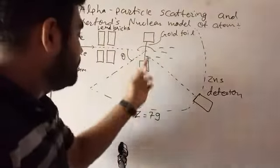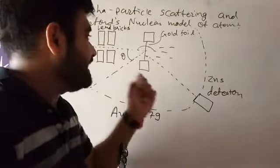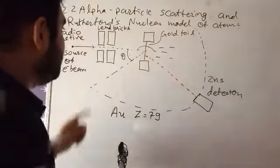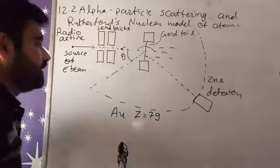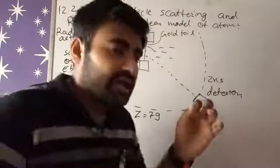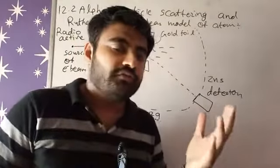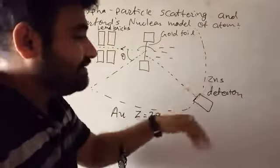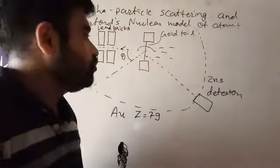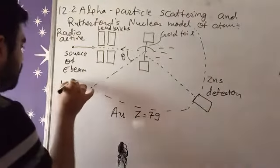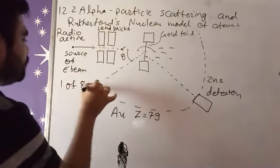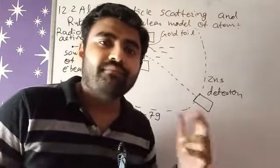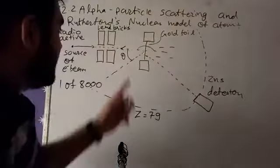So whenever this electron is just getting head on collision with the nucleus of gold, it will reflect it back. And that reflection angle will be 180 degrees, because the path is same for emitting and it is same as for reflecting. So only one of 8000 electrons comes in the same path which they get emitted. Right? So they get reflected here.